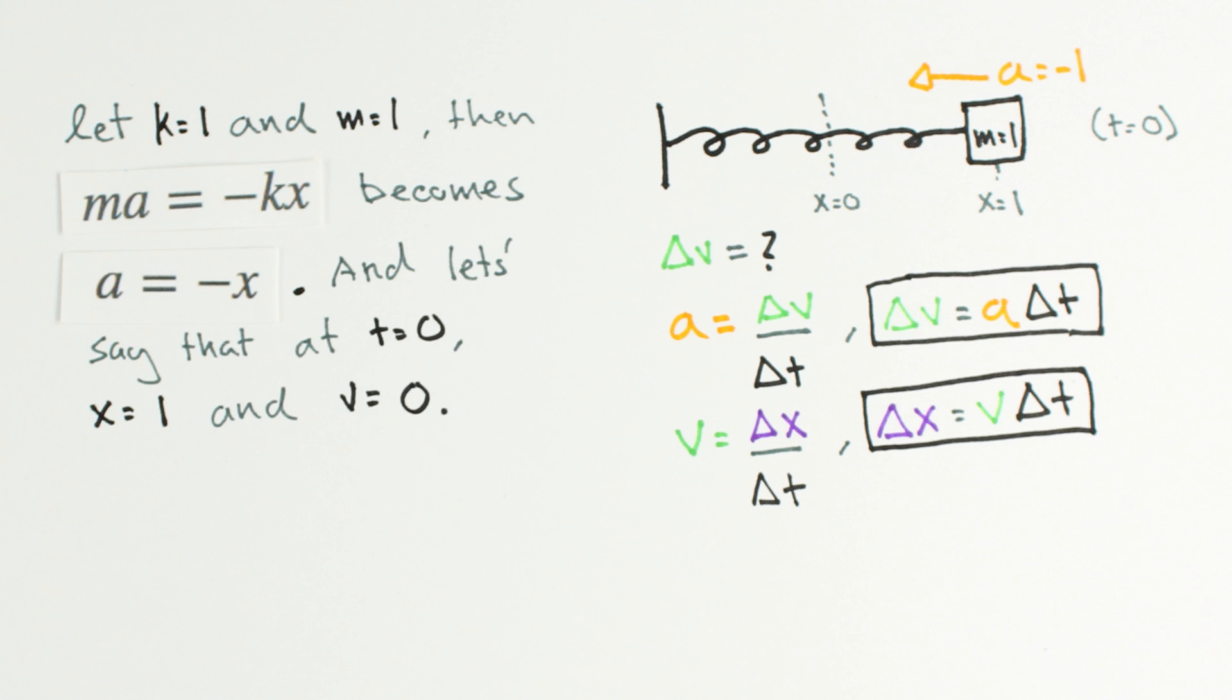We generally want delta to be small to produce accurate results, so let's let delta t be 0.1 seconds.